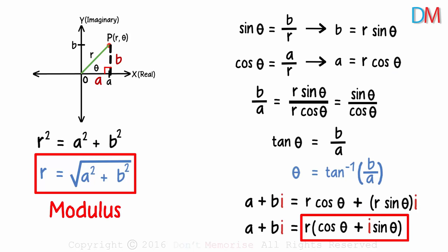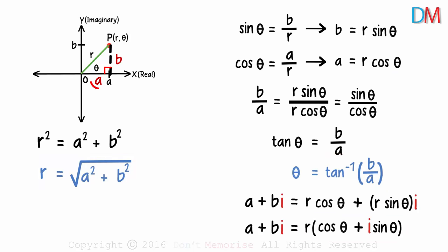r is the modulus of z and theta is the argument of z. So if we are given a and b, we can get the polar coordinates r and theta. And if we are given the polar coordinates, we can get the values of real and imaginary parts.